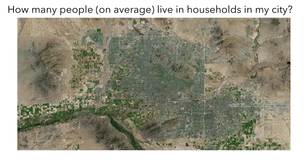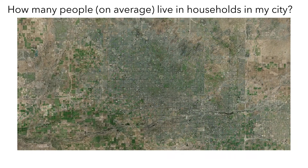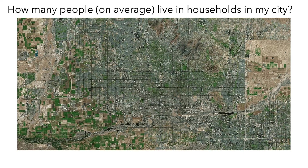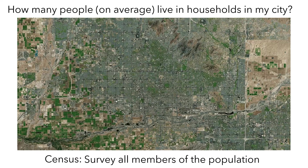Here is a view of your city — let's zoom in to get a better sense of what it looks like. Your first idea might be to visit every household and count the number of people who live there. This is called a census, where you survey all the members of the population — in this scenario, all of the households. This method will produce perfect data, but surveying all of the households would take more time and resources than you have available.